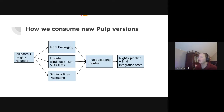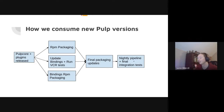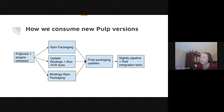Once those are done, we do some small final packaging updates to point installations at the new Pulp version, and we run a pipeline which does final integration tests from a Cotillo user perspective — it creates repositories, publishes content views, syncs to our smart proxies, and does all the highlights of what a user might want to do.